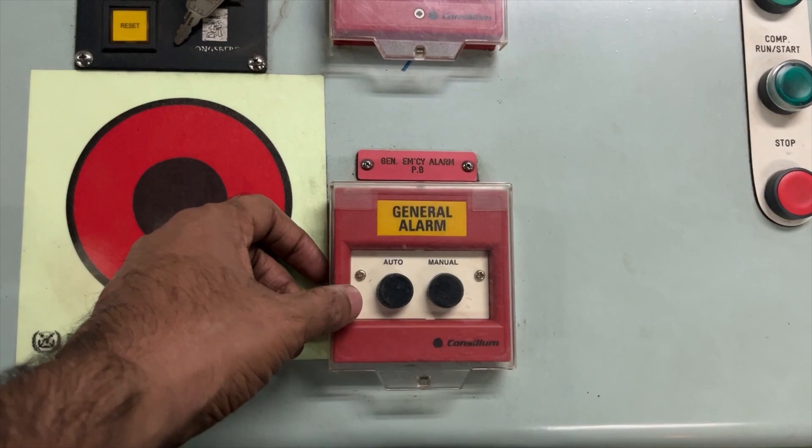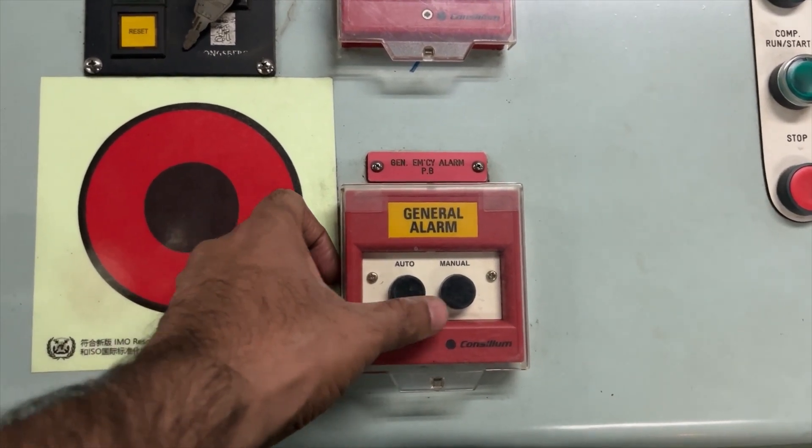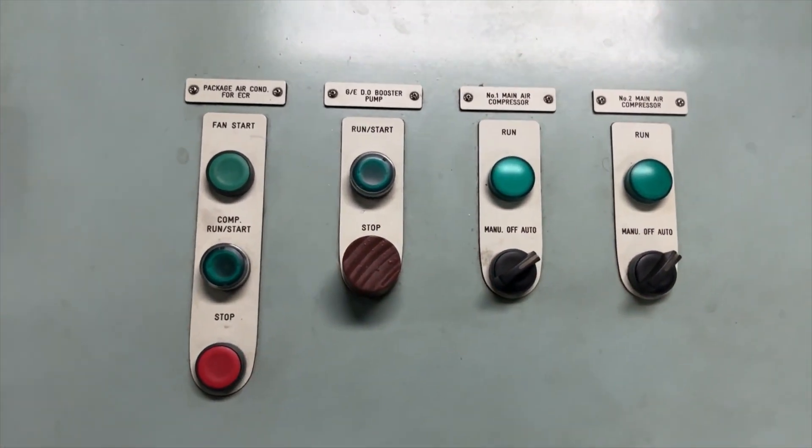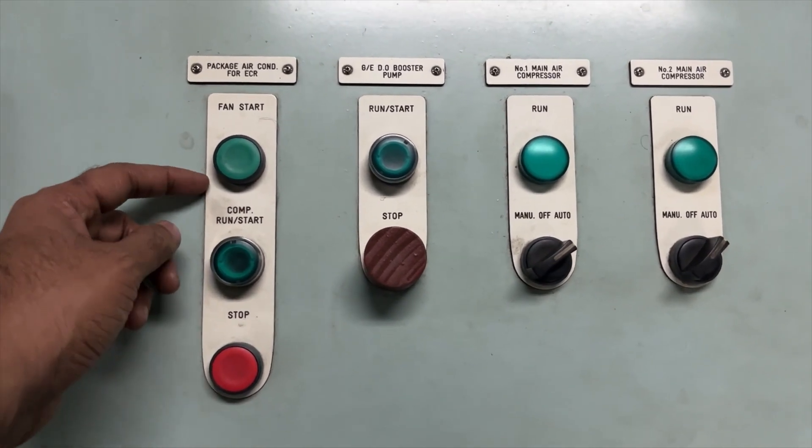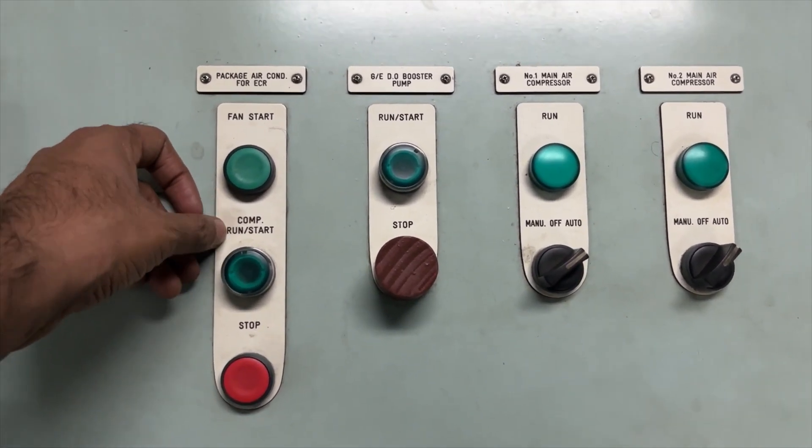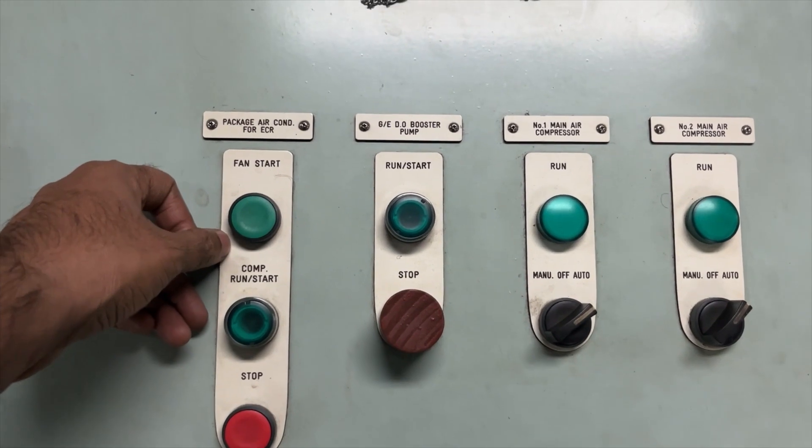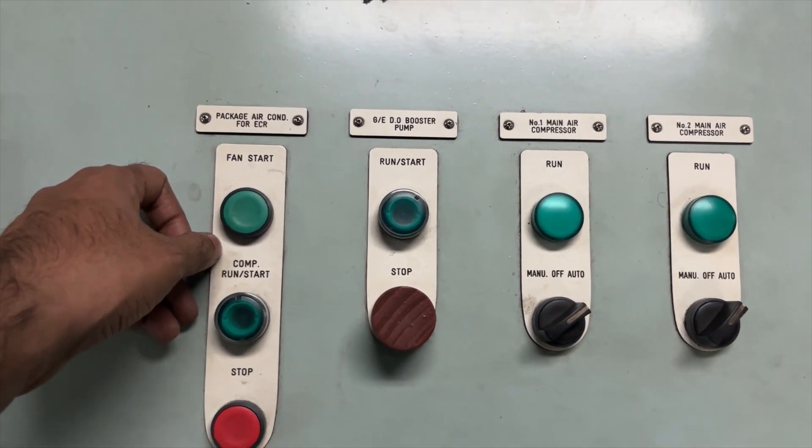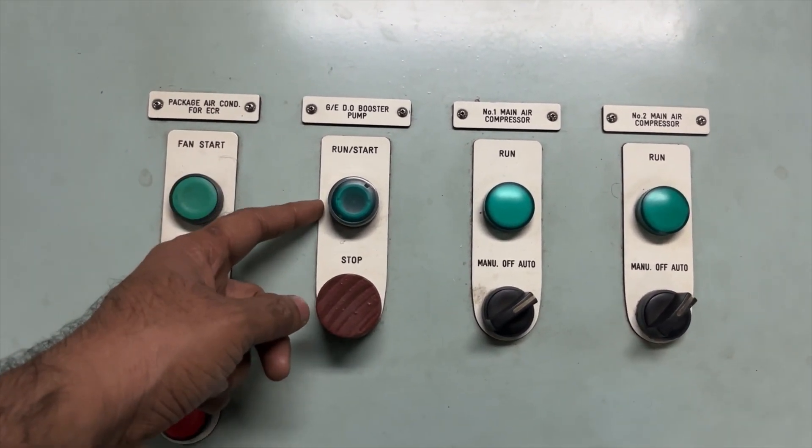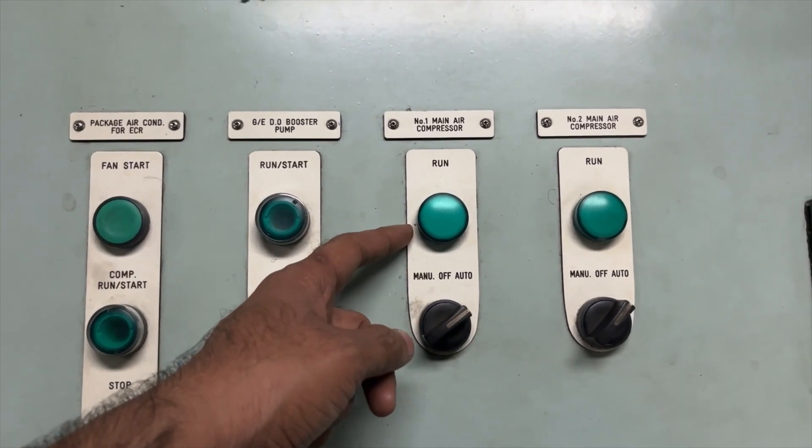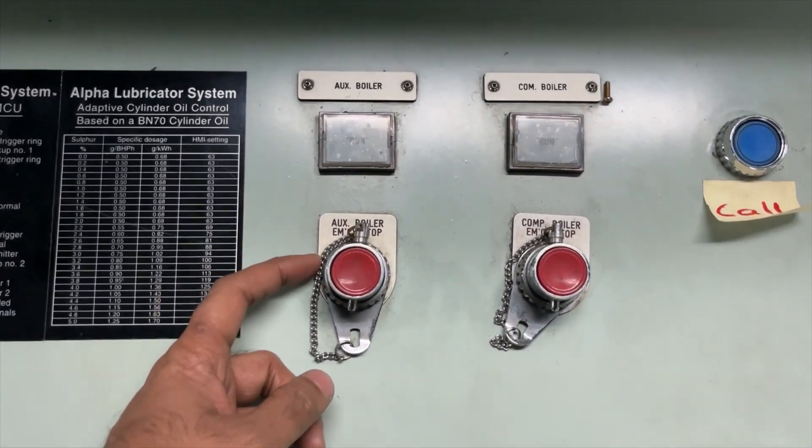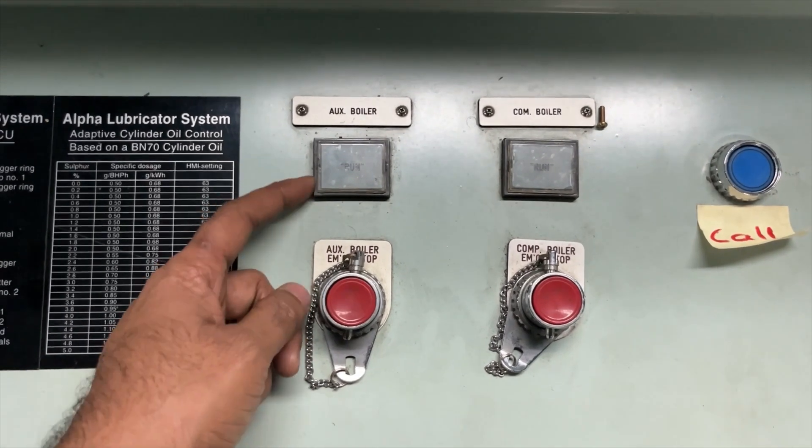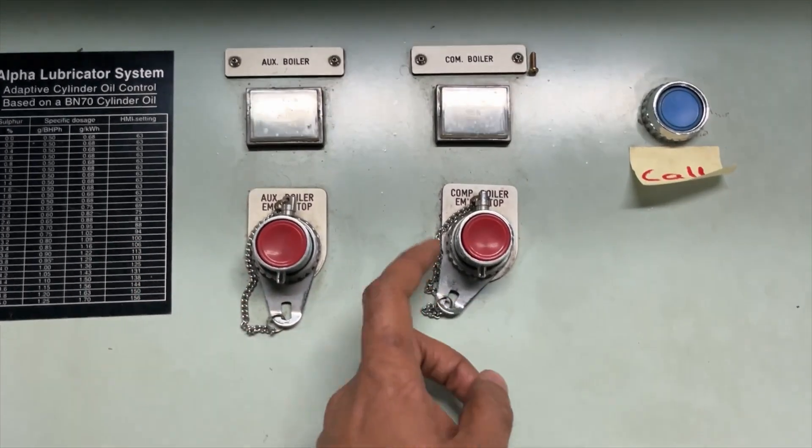And this is general emergency alarm, two modes are there auto and manual. These are the push buttons to start your BDAC, the AC generator, DG booster pump, main air compressors, auxiliary boiler. If they are running they will indicate and these are the emergency stops.